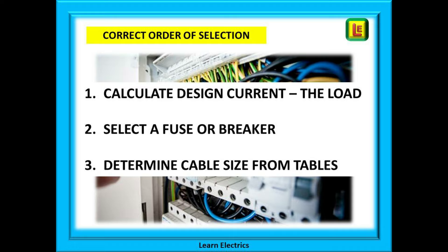And now we can determine the size of cable to install by looking at a set of standard tables. We use the symbol IZ for cable rating. If we know how much current is to flow through the cable, the tables will tell us the cable size to select. Too small a cable and the cable may be damaged or even catch fire. Too big a cable and the customer or you are paying for extra copper that you do not need.